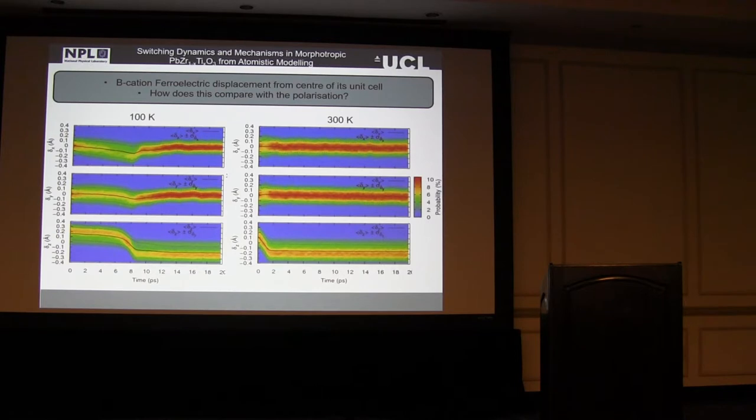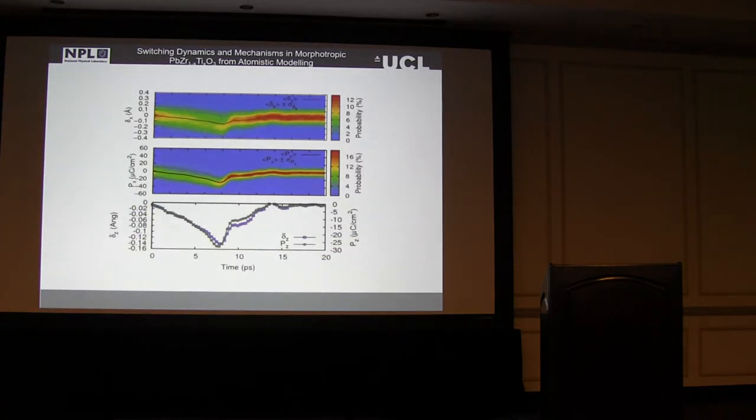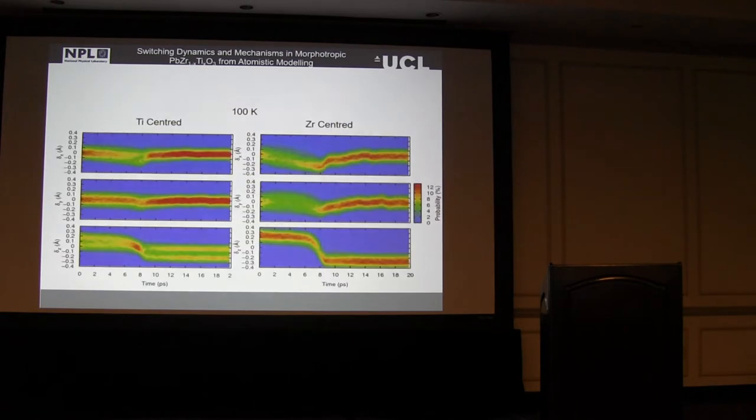This is kind of similar. Now what I'm looking at is the B-cation ferroelectric displacements. Again, we see that it's very comparable to the polarization, however we've got a much wider distribution, but the profiles of the curves follow quite well. In fact, if I compare them, here, so this is the ferroelectric displacement of B along X, and this is the PX. If we compare the profiles of the curves, we see they're extremely similar, so this is encouraging because this is what we expect to see. We do note there are some slight differences, and this is because of contributions to the polarization from the A-cation cage, which isn't included here in ferroelectric displacement.